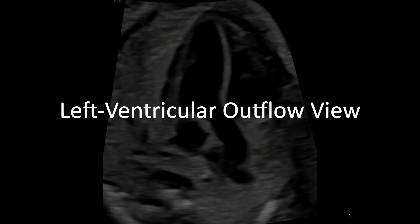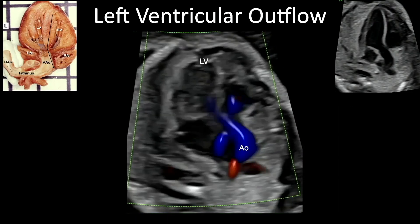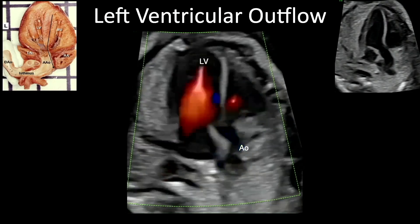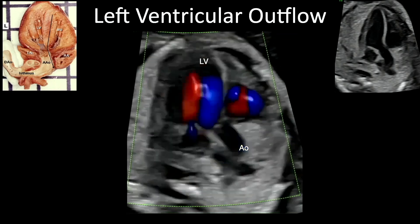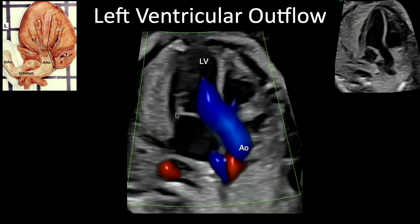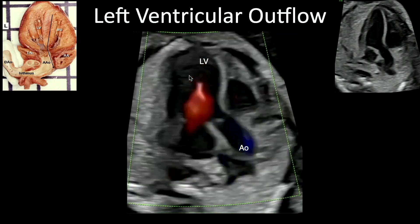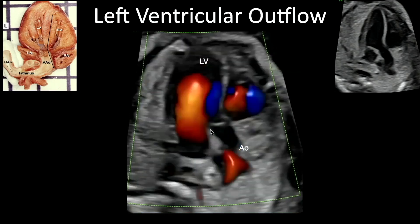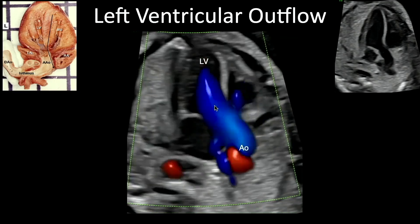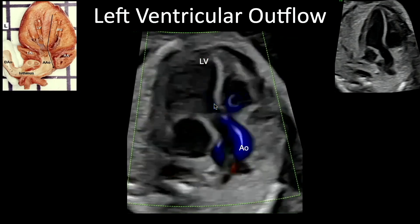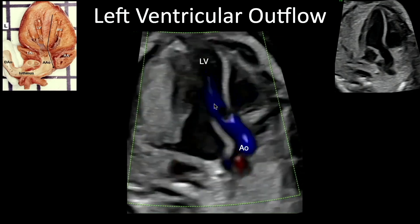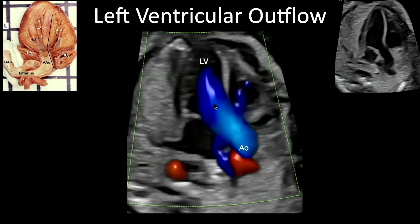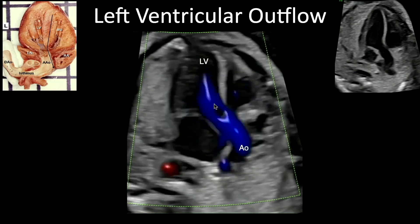Looking at the LVOT, it comes out of the left ventricle — here you see inflow into the left ventricle, mitral valve, then outflow. Both the mitral and the aortic valve are in the same plane, unlike on the right side, where the tricuspid inflow and the pulmonary outflow are not in the same plane and are actually in a different orientation.